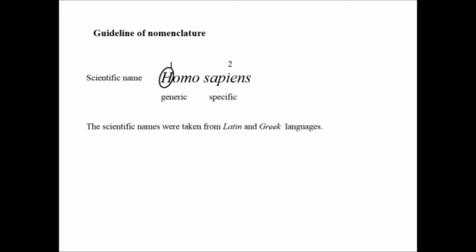Another thing is that Homo sapiens, when we are writing in a book in typing form, it should be in italic form. But when it is written by hand on a copy, it should be underlined separately.